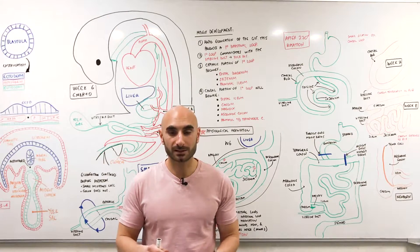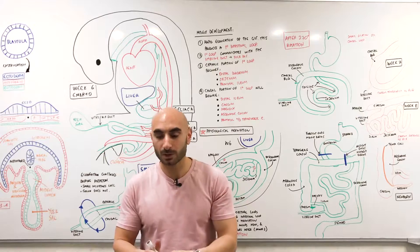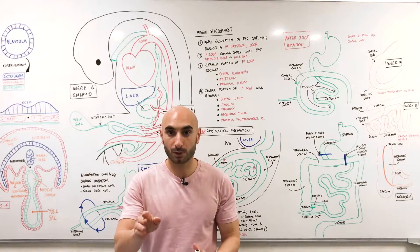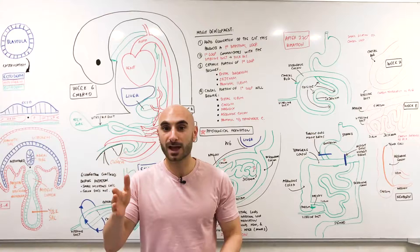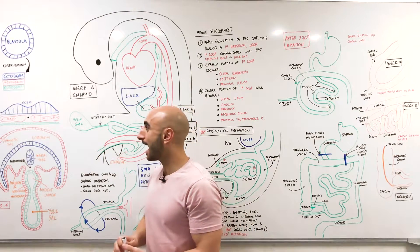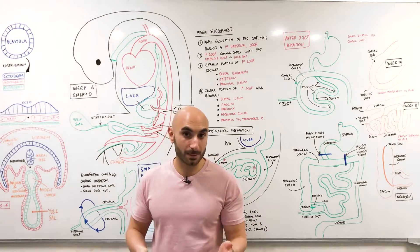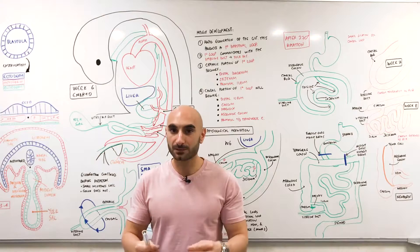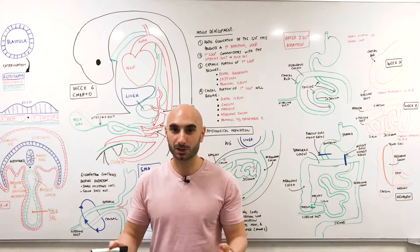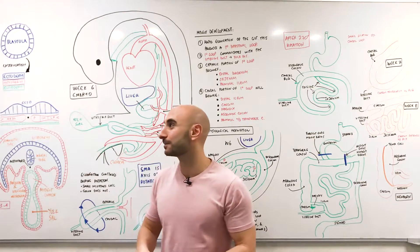The midgut is the portion of GIT distal to where the bile duct enters the duodenum, all the way until the junction of the proximal two-thirds and the last third of the transverse colon. Although watching the previous video on foregut would be a good idea, this video is made so you can understand midgut embryology independently.